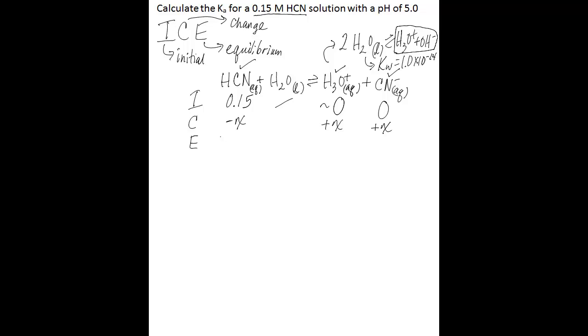And for equilibrium concentrations, for hydrocyanic acid, we have 0.15 minus X. And for hydronium ion and cyanide, we have X. So the next thing you want to do is write the equilibrium equation for acid dissociation. So that's Ka equals the products, hydronium ion concentration multiplied by cyanide ion concentration, divided by the reactants. You're only including hydrocyanic acid here because water is a pure liquid and not included. So what we're trying to do for this problem is find Ka.